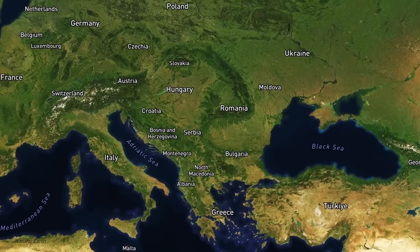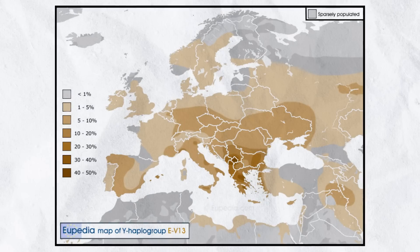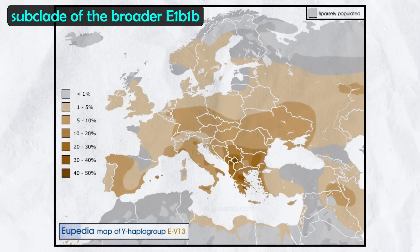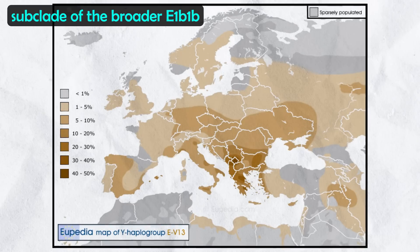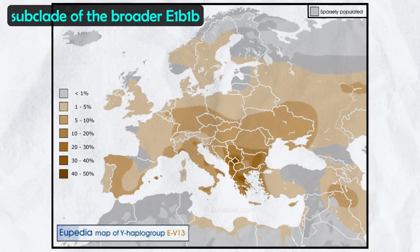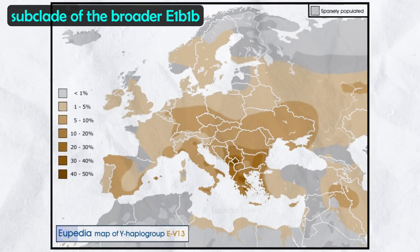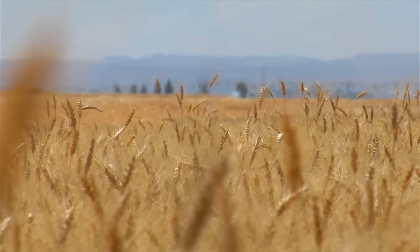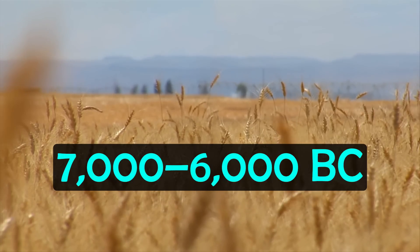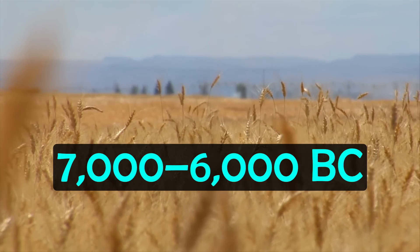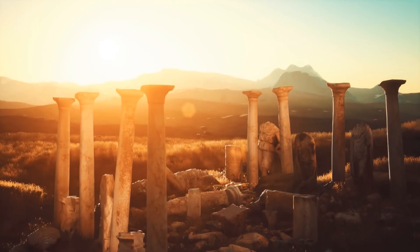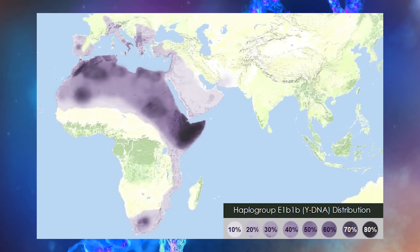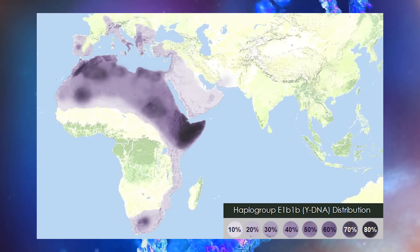Another common Y-DNA haplogroup in this region is EV13, at around 10 to 40%, which is a subclade of the broader E1B1B. It is the most common E1B1B lineage in Europe, particularly high in the Balkans, in Greece and in Albania. EV13 is believed to have originated in the Neolithic period, around 7,000 to 6,000 BC, and has deep historical connections to early farmers, Indo-European migrations, and ancient civilizations like the Illyrians, the Thracians and the Greeks. EV13 descends from EM78, which likely originated in northeast Africa or the Levant around 20,000 years ago.